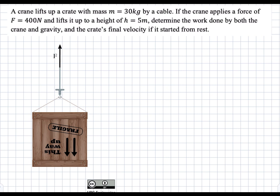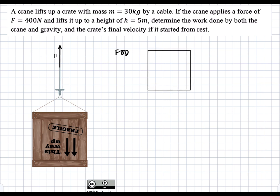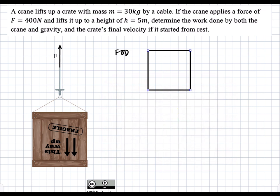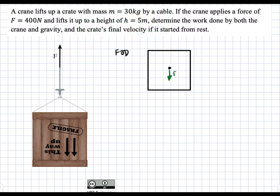So first we're going to start with our free body diagram and we're going to add all our forces. At the center of gravity, we're going to add our force due to gravity, Fg. And then we have our force pulling up, which we're going to call F. And these are all of our forces.